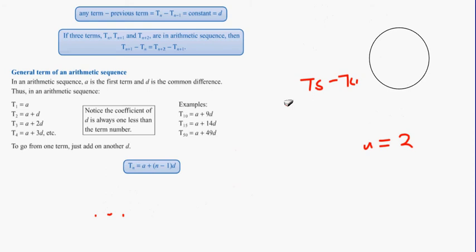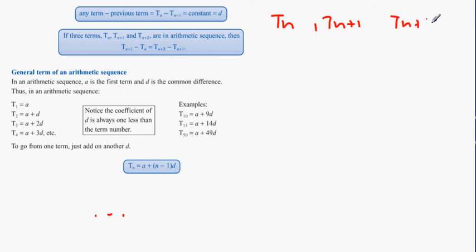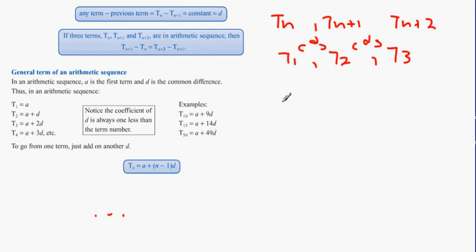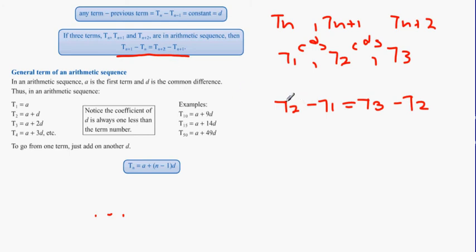If there are three terms in an arithmetic series — for example Tn, Tn+1, and Tn+2, think of them as T1, T2, and T3 — the difference between consecutive terms is always the same. So we can say that T2 minus T1 equals T3 minus T2. This equal-difference property holds for all terms in the arithmetic progression.